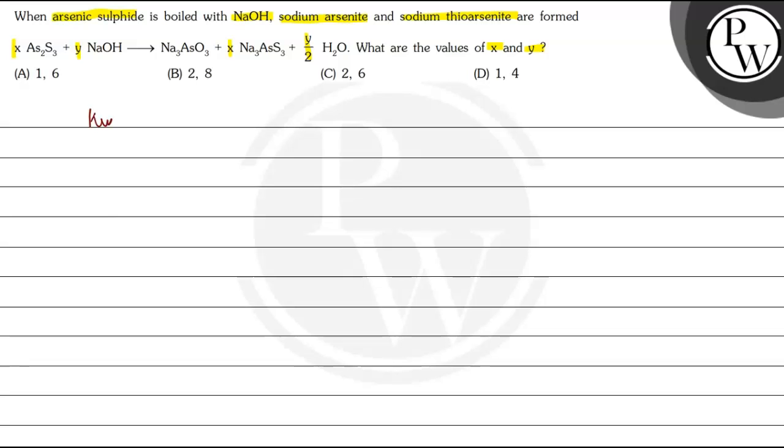First of all, the key concept is basically about balancing the reaction. For balancing, we have to see that the atoms on the reactant side and product side are equal. So for that, first of all we write down the reaction.